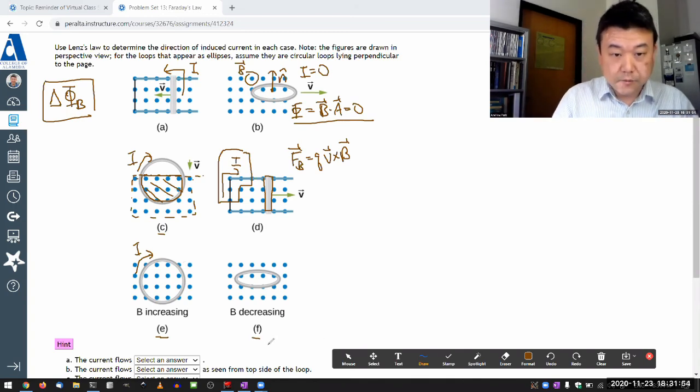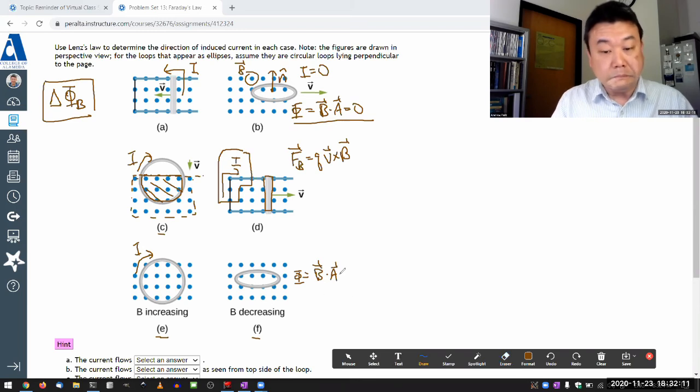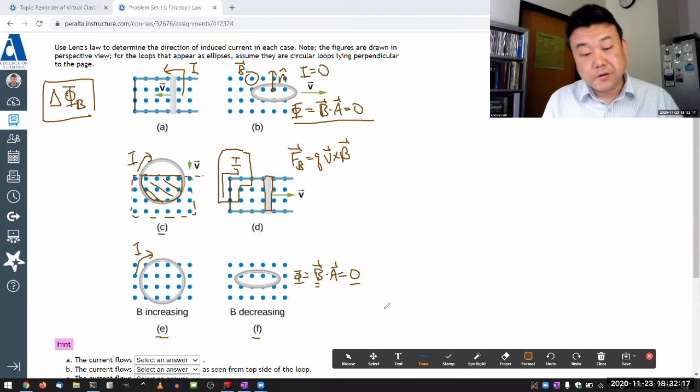F, it's in some ways very similar to B because the magnetic flux to start was already zero when you calculate B · dA here, it's zero because they're perpendicular. So even with the changing magnetic field, it doesn't change away from zero. So no current will be flowing here.